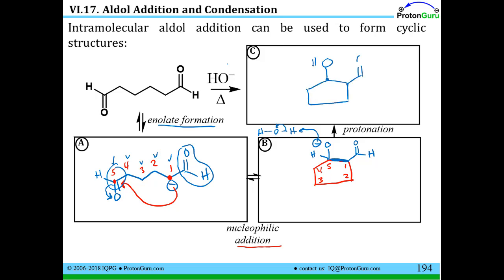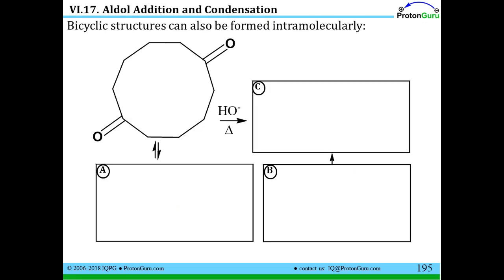We've protonated this O that was attached to carbon number five. We have our five-membered ring and our aldehyde. Now one thing I'd like to point out is we have made two chiral centers. We would expect a mixture of stereoisomers because we started with achiral starting materials.